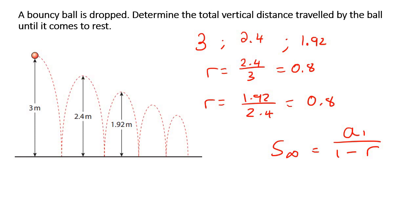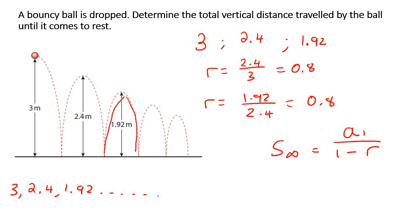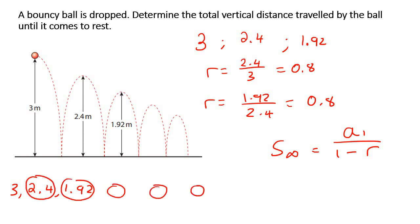You've got to be careful. What a lot of learners are going to do is just put all these numbers in and think they're done. But what you're doing is only looking at 3, 2.4, 1.92, and all the other numbers after that. That is not what the ball is actually doing. This ball is going 2.4 up and then 2.4 down. It's going 1.92 up and 1.92 down. So these numbers — and all of the others — need to be doubled because we're going up and down. We're not going to double the 3 because the 3 only goes down. So ignore the 3 and leave it out completely for now — we'll take care of that later.